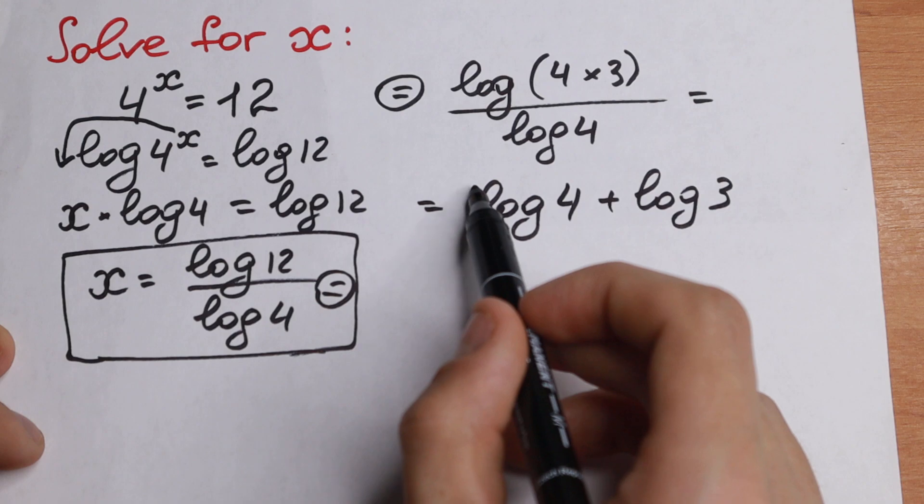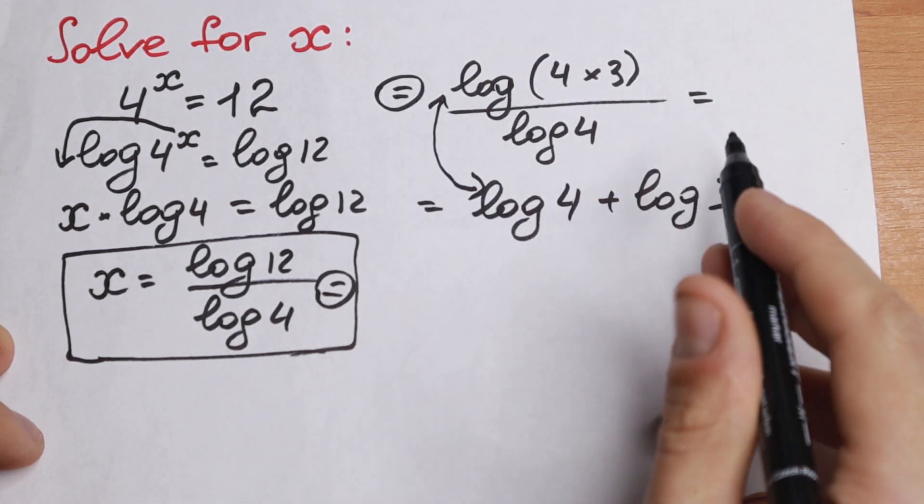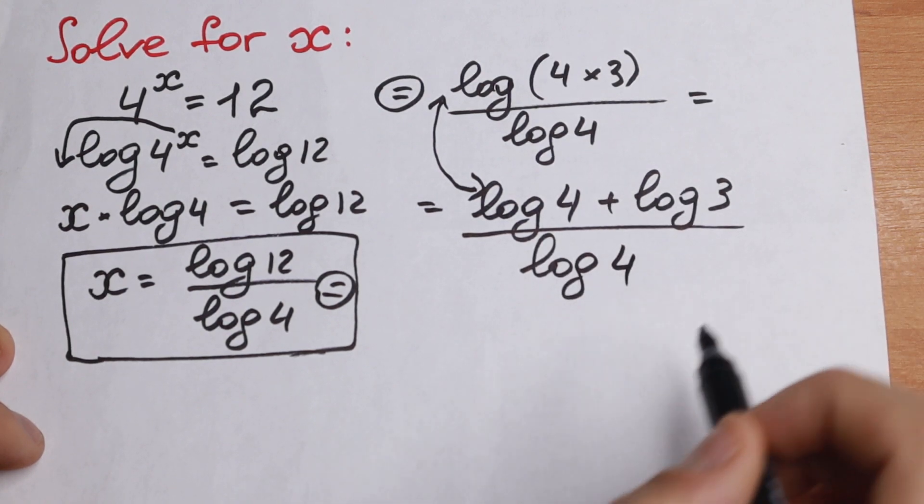And this is a reversible rule, so you can use it either way. So log 4 plus log 3, all divided by log 4.